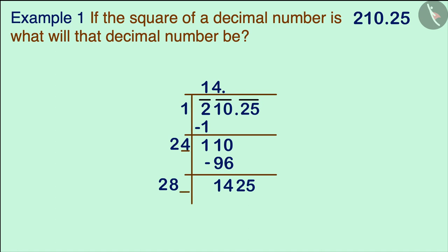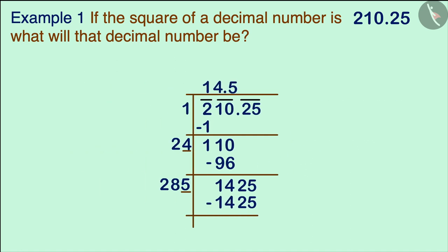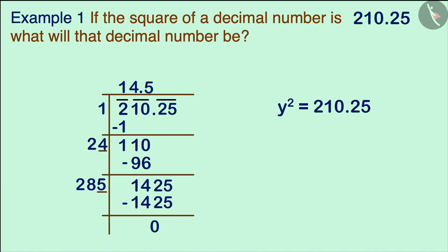We multiply the units digit of the old divisor by 2 to get 28, writing it as the new divisor with a blank space to the right. We guess the largest digit such that the new divisor multiplied by that digit gives a product equal to or smaller than the new dividend 1425. That digit is 5, giving a remainder of zero. So the square root of 210.25 is 14.5.